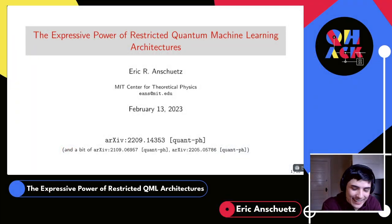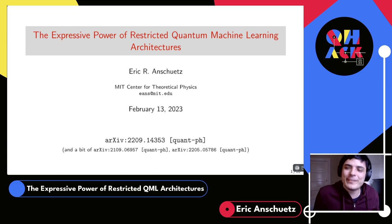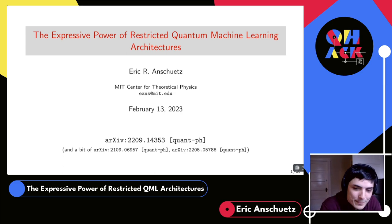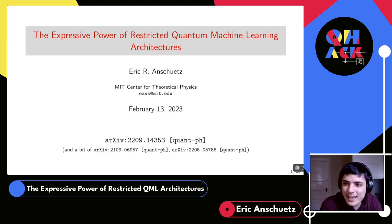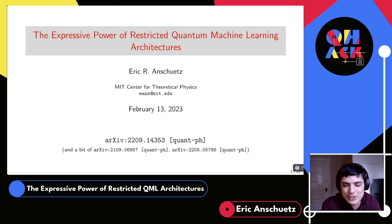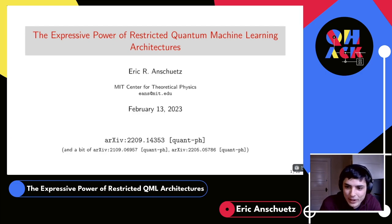I'm a PhD student at MIT finishing this spring. I work on quantum algorithms, specifically quantum machine learning algorithms. Today I'll be talking about something I've been really interested in recently: restricted quantum machine learning architectures. I'll explain what I mean by that and why I'm interested in it. At the bottom are a few papers that discuss this material.